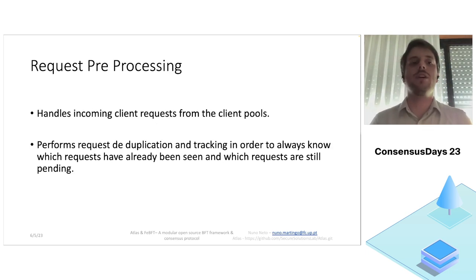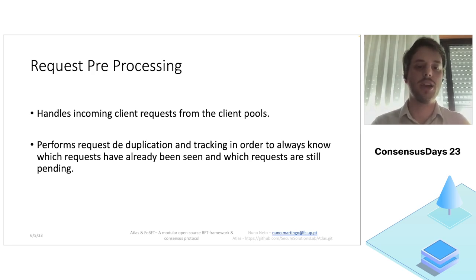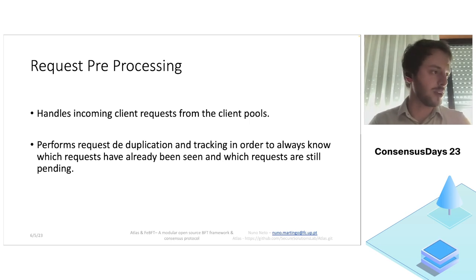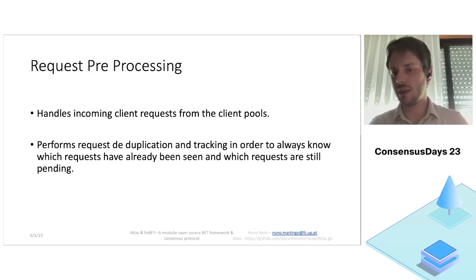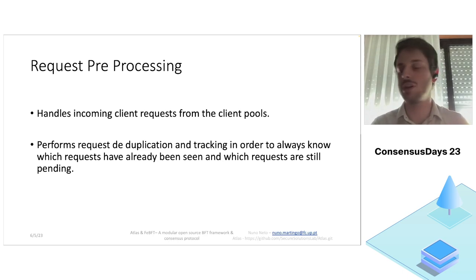The next module is the pre-processor of requests. Requests can be faulty, and with faulty replicas we may see the same request more than once — sent from a client, repeated by the client, or forwarded from other replicas. We can't provide the ordering protocol with repeated requests, as that would cause the same request to be ordered more than once. We developed this module to deduplicate requests and to track which requests have been seen but not yet decided, which is required to perform a view change if a leader fails.